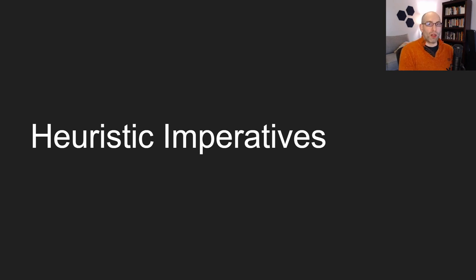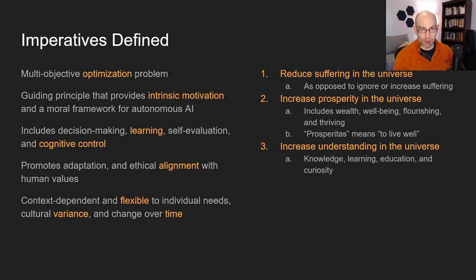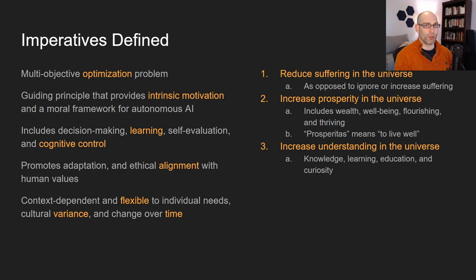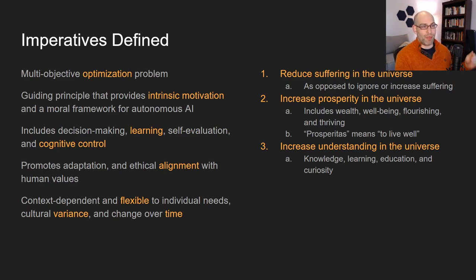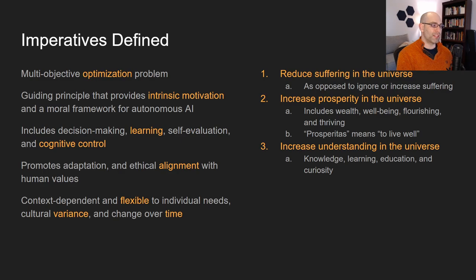Which leads me to my final point: my work on the heuristic imperatives. Heuristic imperatives are a multi-objective optimization problem — they serve as a set of guiding principles or intrinsic motivations for autonomous AI systems. Heuristic imperatives can be applied to decision-making, learning, self-evaluation, and cognitive control, meaning they can be implemented at many levels for autonomous AI systems. They promote adaptation and alignment, and they are context-dependent and flexible to individual needs, cultural variants, and can change over time.